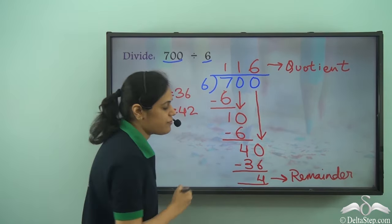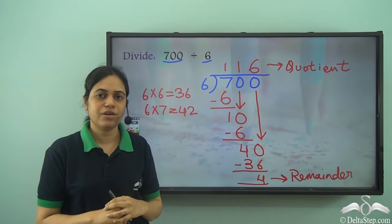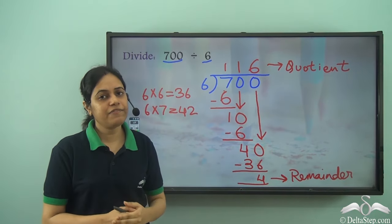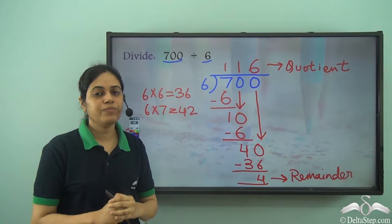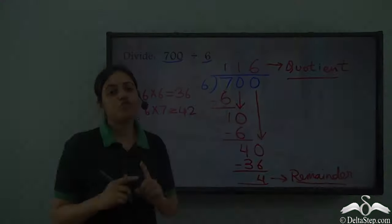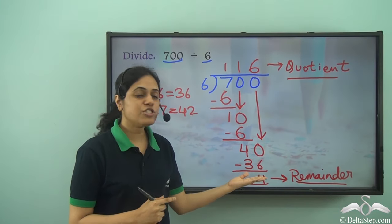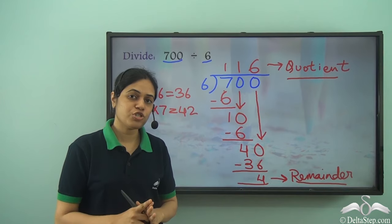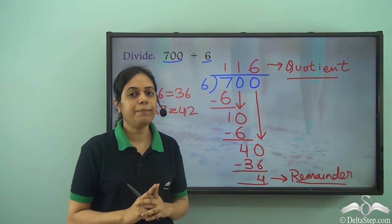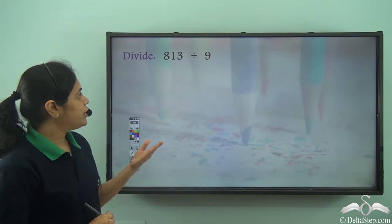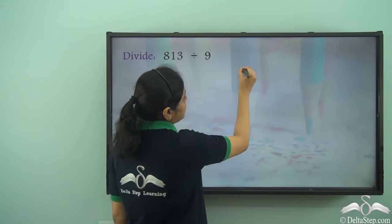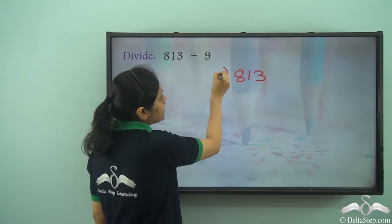Remainder in a division can never be equal to or more than the divisor. The remainder of a division will always be less than the divisor. In such divisions where the remainder is not 0, you need to mention both quotient as well as the remainder for the answer to be complete. Now, can you do this on your own? What is 813 divided by 9?